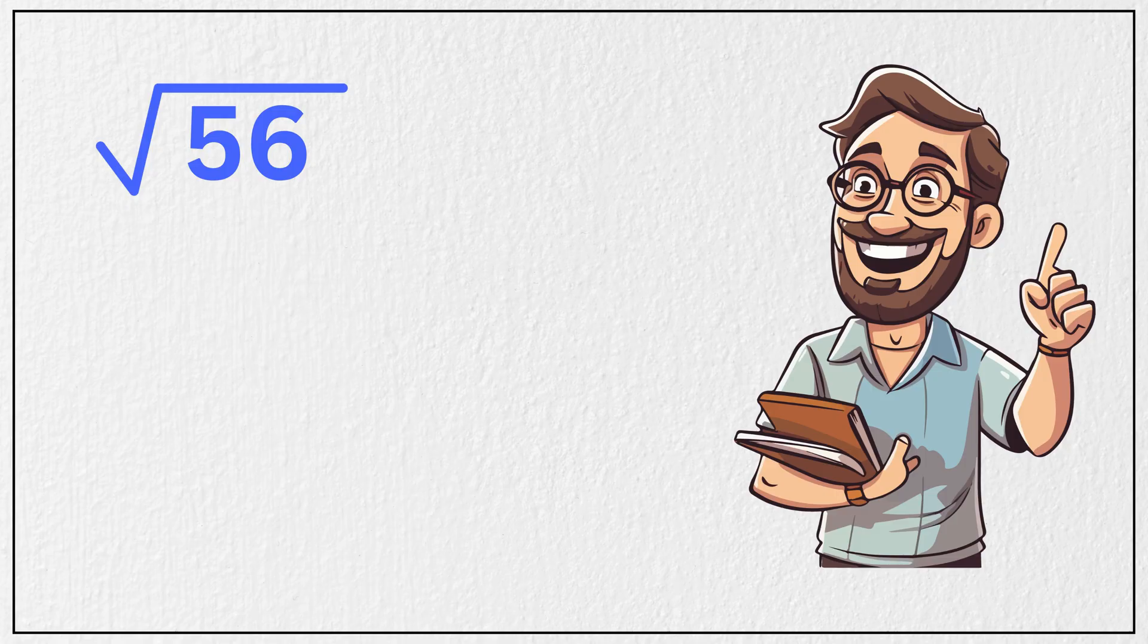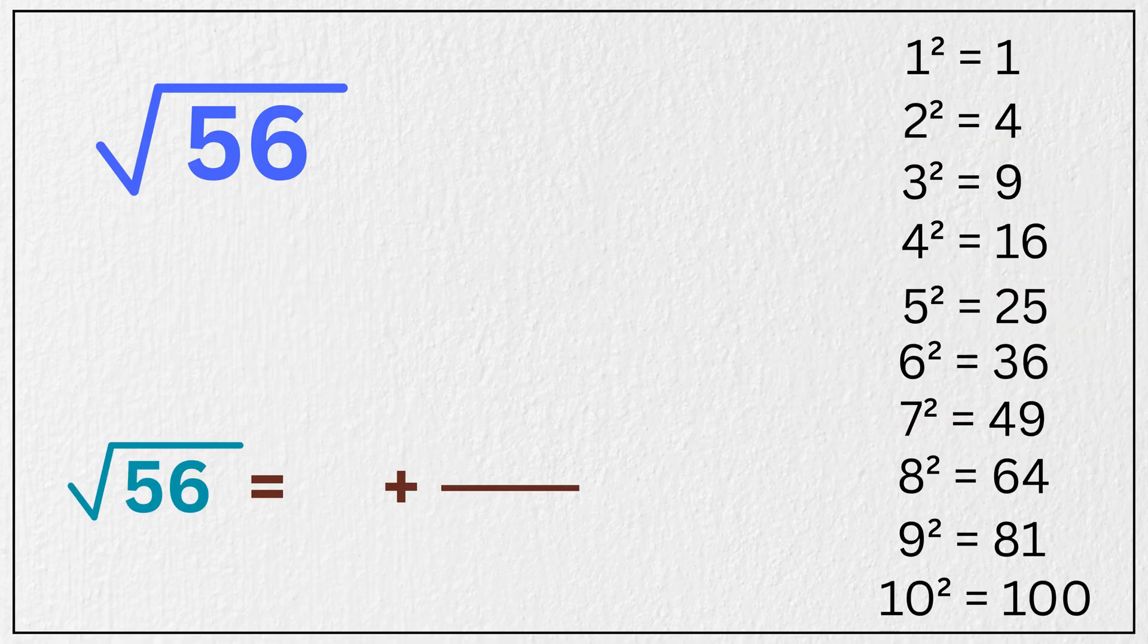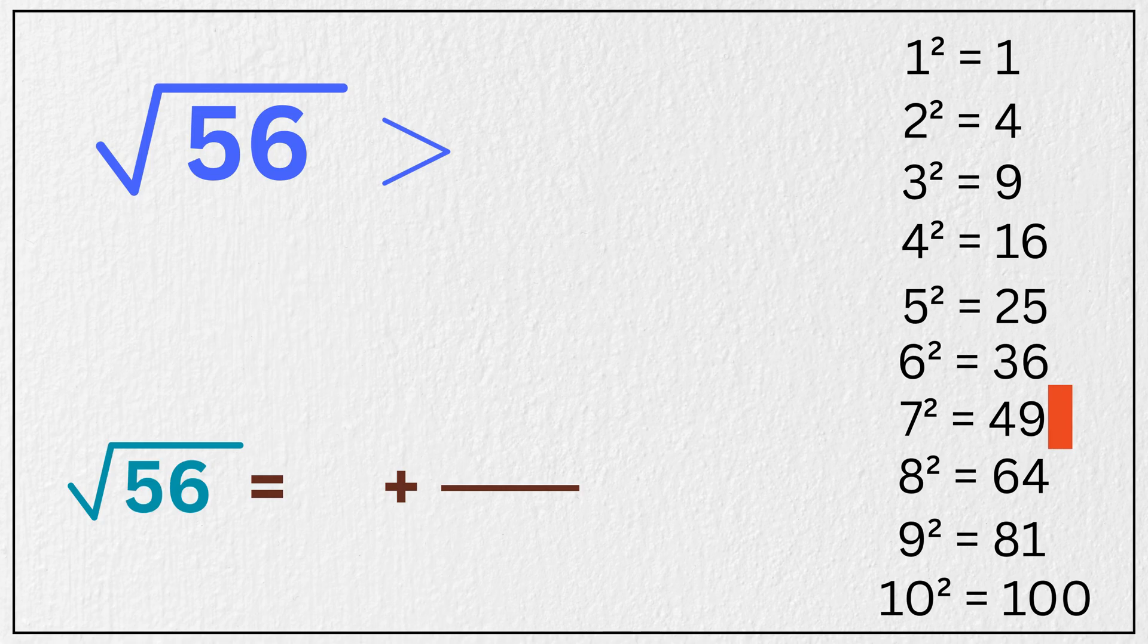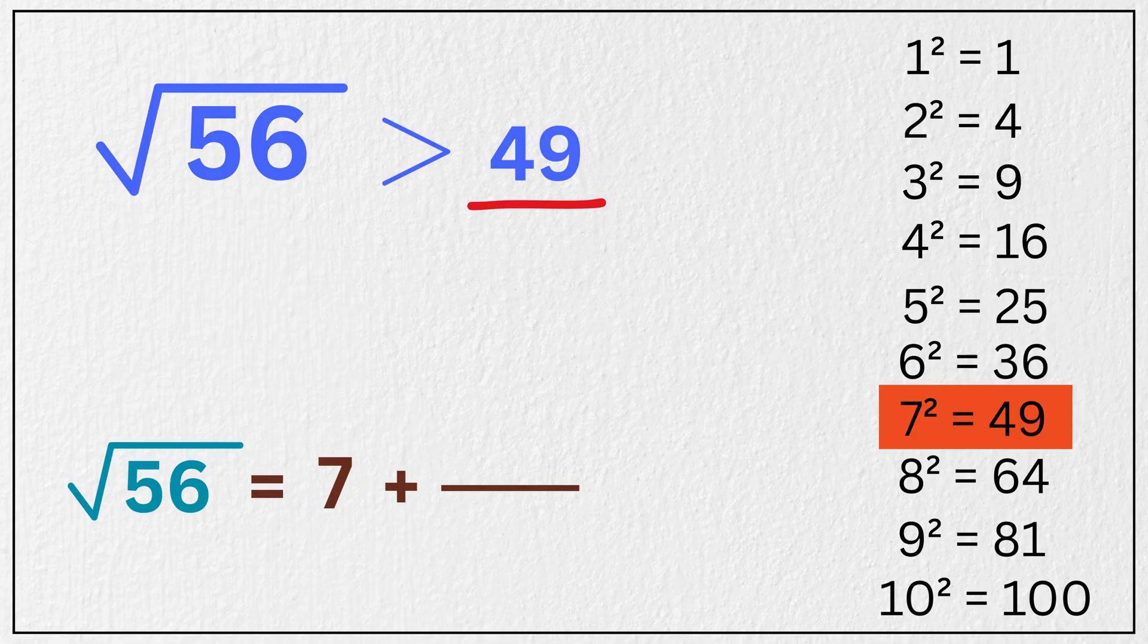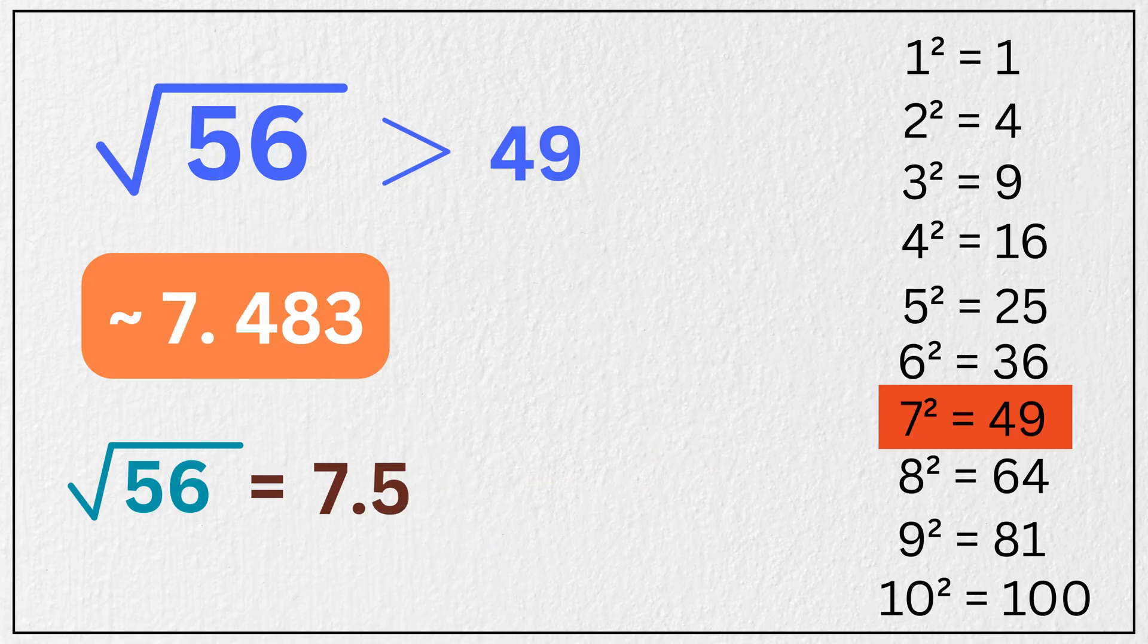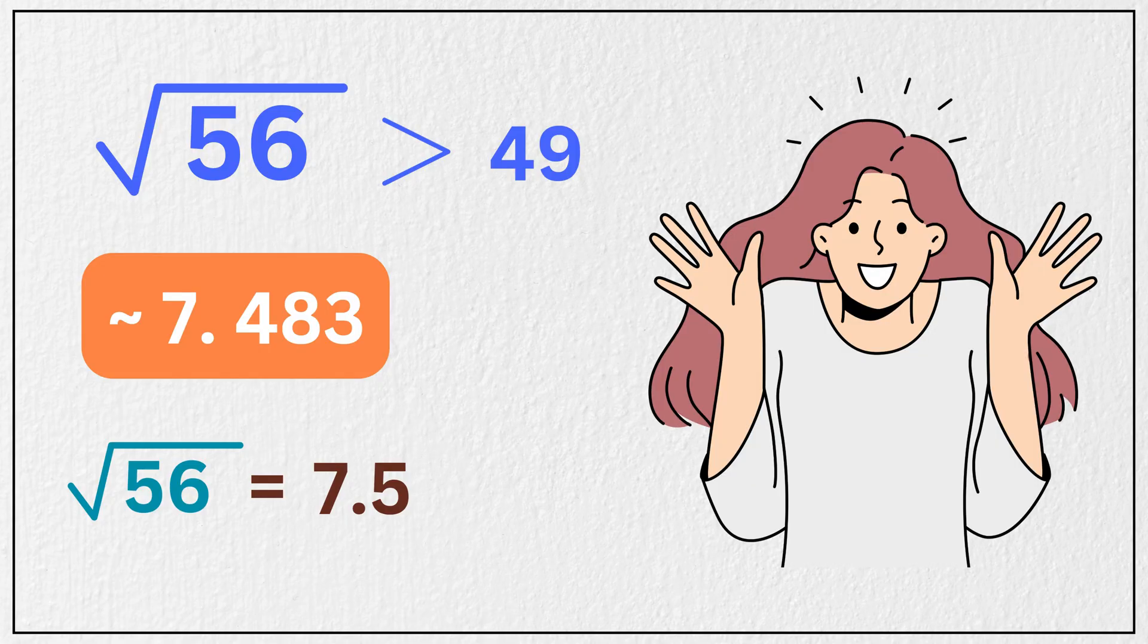Now try the square root of 56. The square number just less than 56 is 49, and its square root is 7. Subtract 49 from 56 to get 7. Double this 7 to get 14. 7 over 14 is again 1 over 2. So our estimated root is 7.5, and the actual value is 7.483. Again, incredibly close, isn't it?